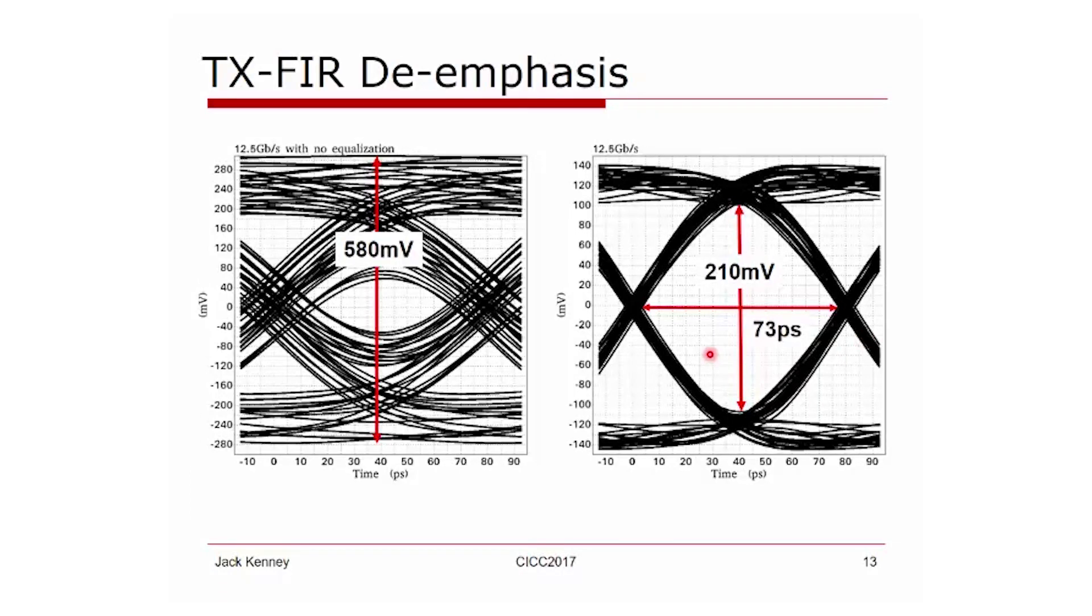Here's an example. On the left, we have no transmit FIR whatsoever. You can see the peak-to-peak swing is 580 millivolts. The vertical eye opening is on the order of about 80 to 90 millivolts.